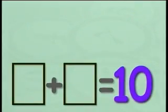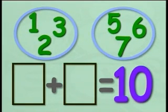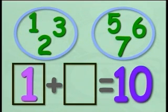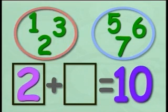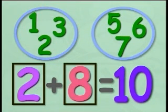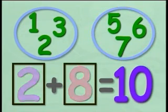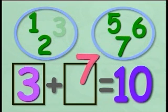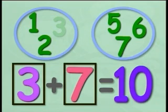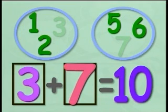Fill in the boxes with the correct numbers from the circles. If we choose one from the circle on the left, we must add it to nine to get ten. There is no nine in the circle on the right. If we choose two from the circle on the left, we must add it to eight to get ten. There is no eight in the circle on the right. If we choose three from the circle on the left, we must add it to seven to get ten. Yes, there is a seven in the circle on the right. The answer is three plus seven equals ten.